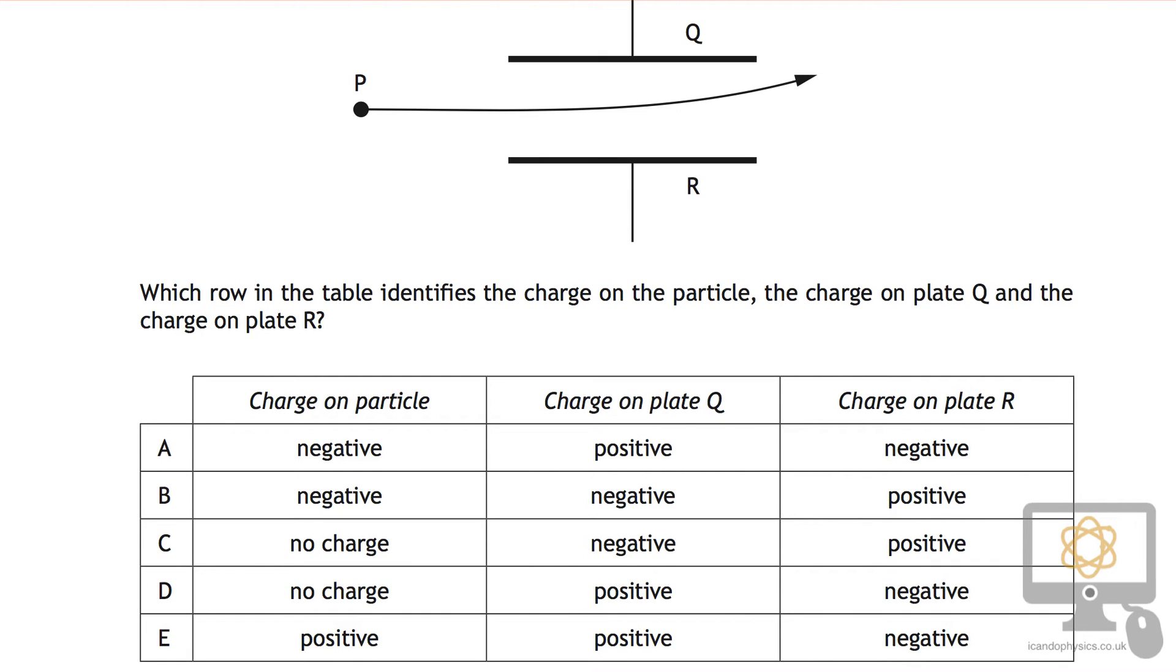So let's just imagine that it's a negative charge and it's entering this electric field here. If the charge is negative and plate Q is positive and plate R is negative, then the charge would come in here, it would be repelled from the negative plate and attracted to the positive plate. And so to be fair before we've gone any further, that's the right option.